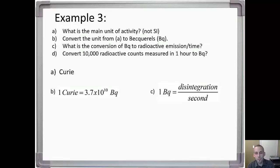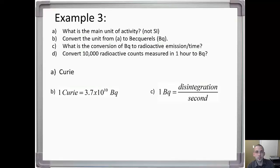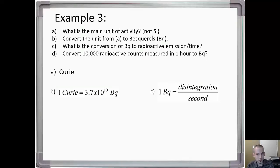A lot of the time a question will say something like '3,000 particles were measured in one hour — how much activity is this in curie?' You'll have to know that one becquerel is one disintegration per second, convert from per hour to per second to get becquerel, and then perform the conversion to curie. That's a common unit conversion you'll see a lot.